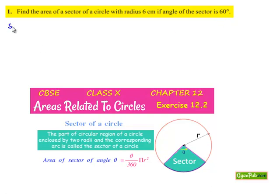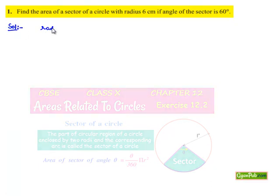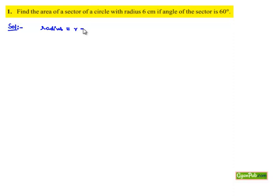Now moving on to the solution, here he has given the radius of circle as r that is 6 cm and theta, angle subtended by the sector at the center of the circle that is nothing but 60 degrees.